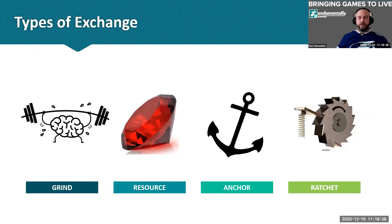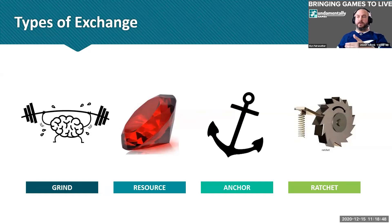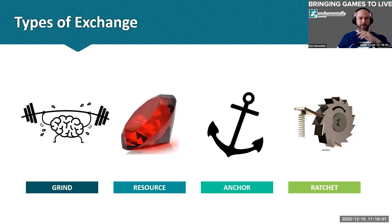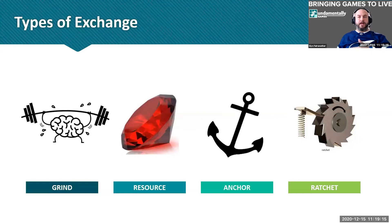Third: anchors are exchanges I cannot make directly — only through engagement with very specific features. For example, a VIP system purchased via tokens earned through normal play rather than bought directly. By engaging with the main game mode I earn pieces towards switching on VIP status. Fourth: ratchets — like conditional gates — cannot be reversed and open up more content. A great example is ELO in Hearthstone: as my ELO goes up I enter different competition brackets, or player levels in an RPG unlocking more content.